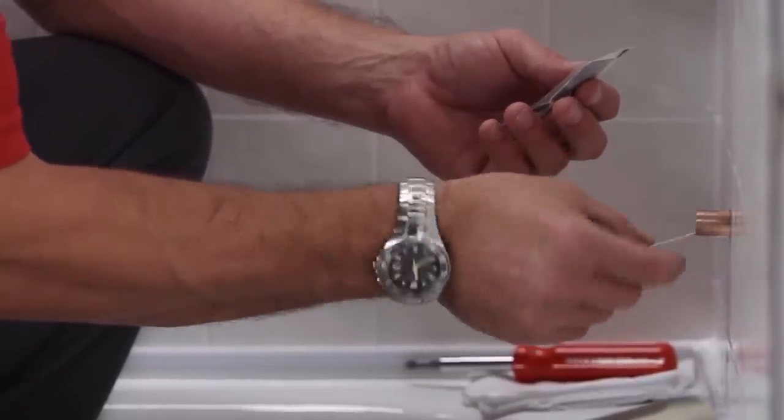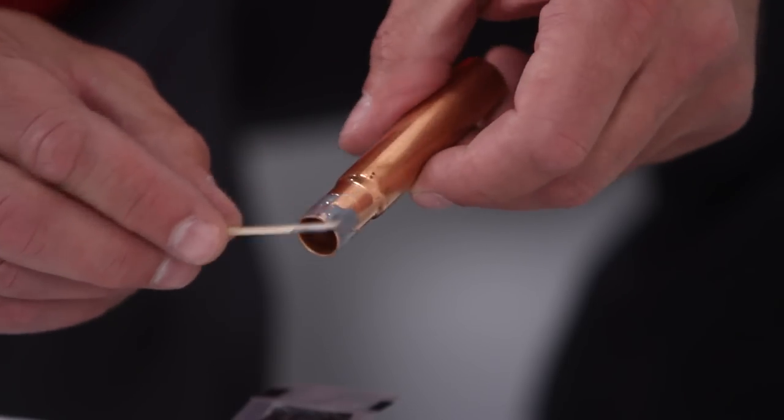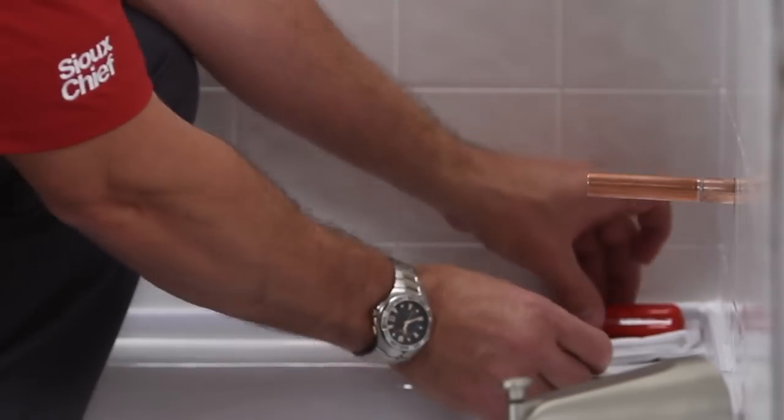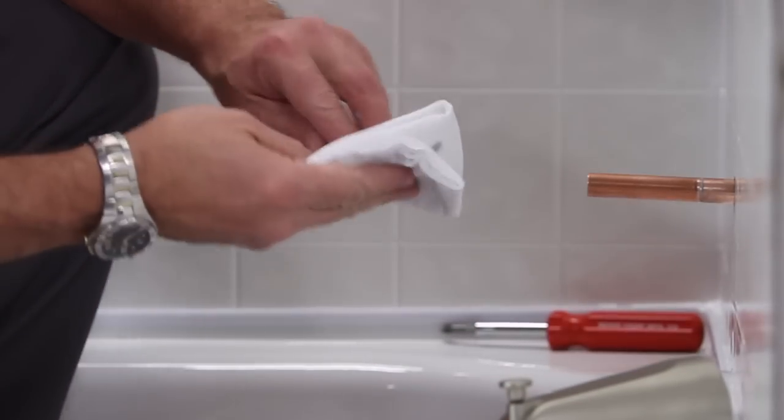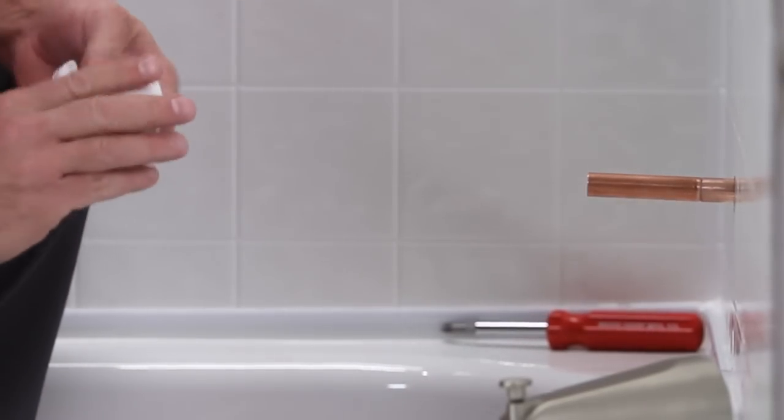Apply epoxy to the outside of the extension. Wipe away any existing epoxy from the tube's exterior so that you have a smooth connection between the existing tube and the extension. Wait 15 minutes for the epoxy to cure before installing the SmartSpout.